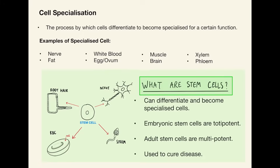There are multiple types of stem cells. Embryonic stem cells are totipotent, which means they can become any type of cell. Adult stem cells are multipotent, meaning they have the potential to become most types of cells. Stem cells are often used to cure diseases — for example, someone who is paralysed and whose nerve cells aren't working can have stem cells used to generate new nerve cells.